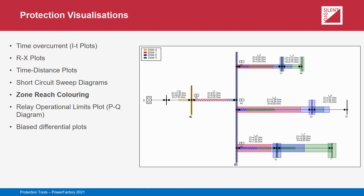Zone reach coloring is another distance protection-specific visualization. In this case, the visualization is shown directly in the single line diagram instead of in a specific plot. The theoretical reach of selected distance device zone settings can be overlaid on the single line diagram based on a comparison of the zone settings to the impedance of the protected lines. Configurable coloring and shading is used to aid differentiation between zones. Zone reach coloring is also initiated using the Protection Graphic Assistant tool.